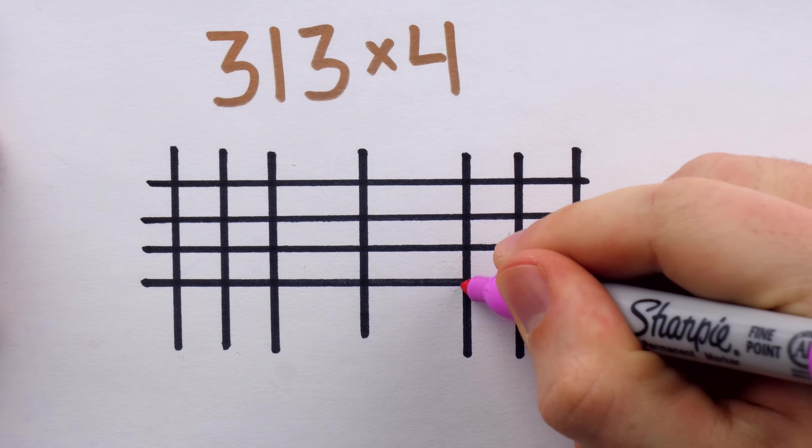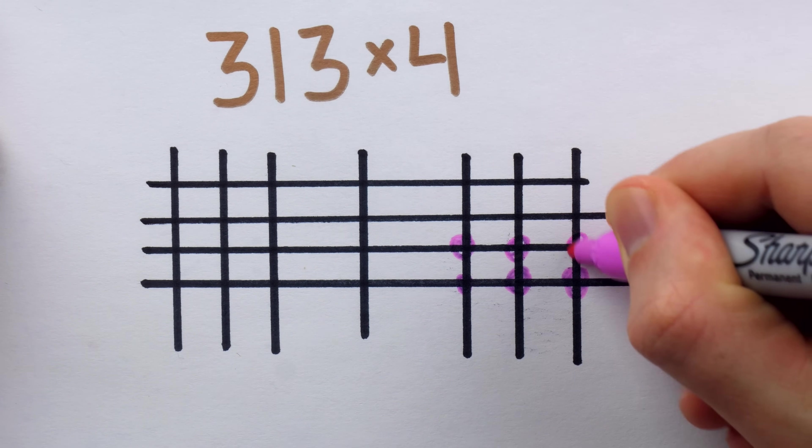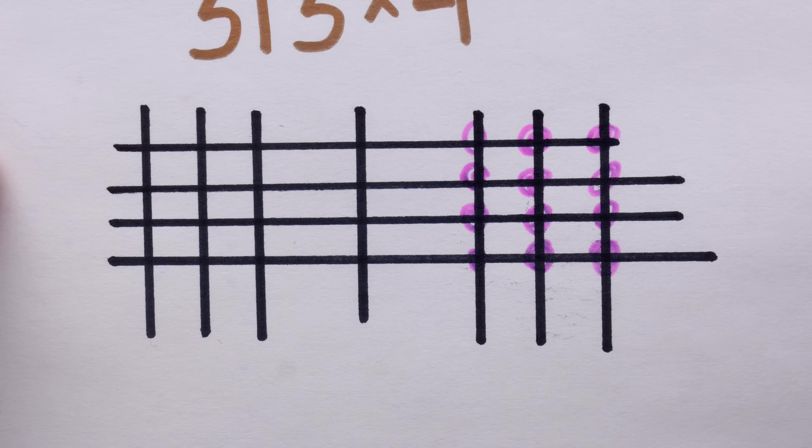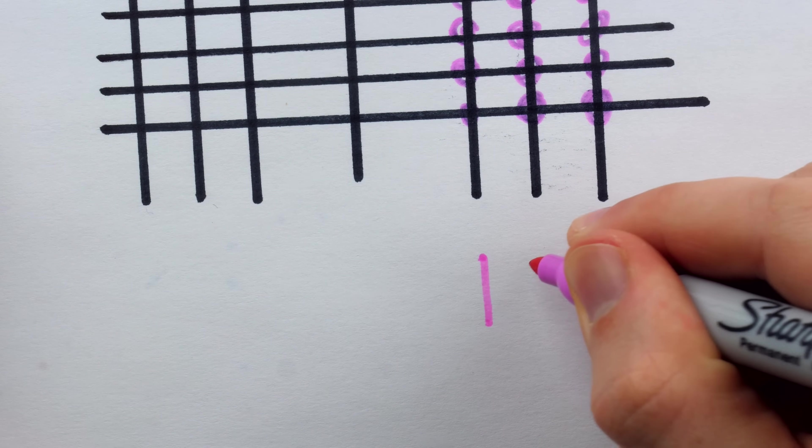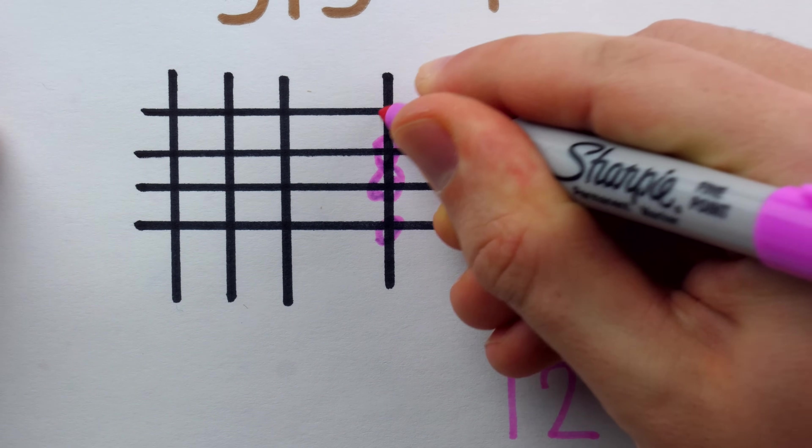If we just followed exactly the method shown in the original demonstration, we would begin by counting these intersections, and of course there are 12 of them total. So to begin our solution, we would write 12, then we would move on to the next set of intersections, and there are four of those.